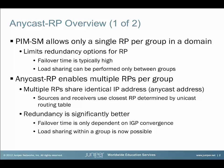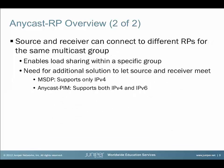Anycast RP allows for multiple RPs in the network that share the unicast address that every router associates with the rendezvous point role. The rendezvous point which receives the register message from the source sends a copy of the register message to the other rendezvous points. Each local DR router communicates with the nearest RP about source or receiver information. The main advantage of Anycast RP is that you can have redundant RPs per group and that in case of failures, the convergence time is much lower. The Anycast RP feature also allows load sharing within a group, which can be useful for bigger deployments.